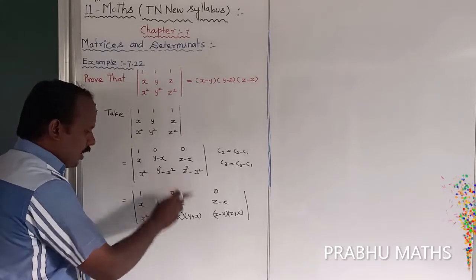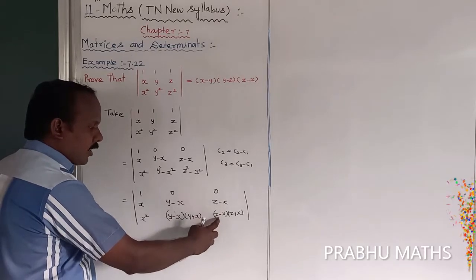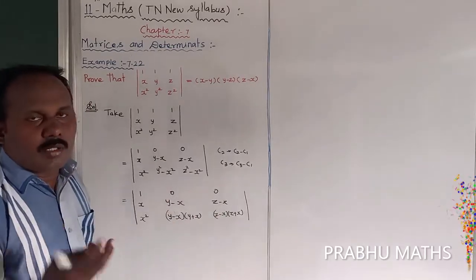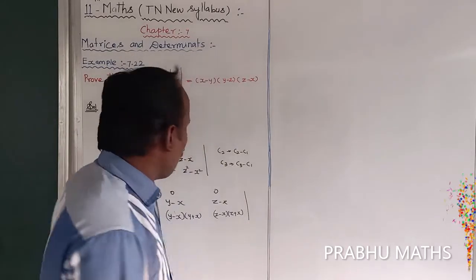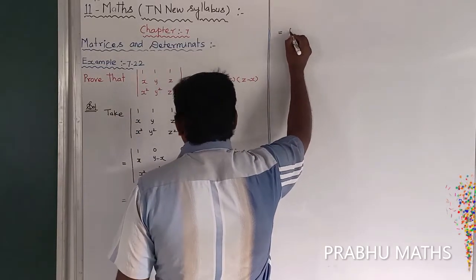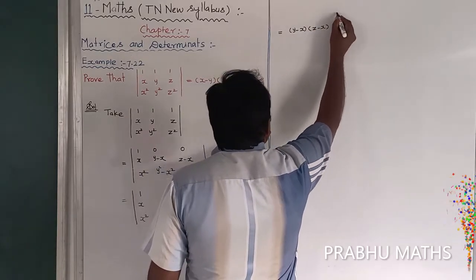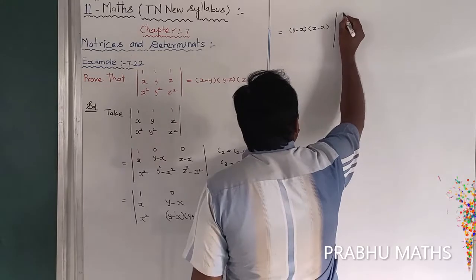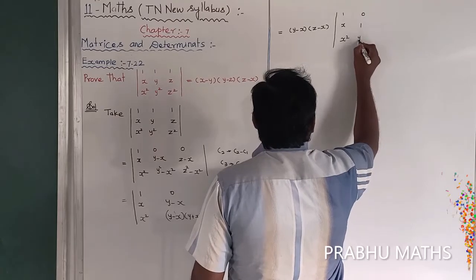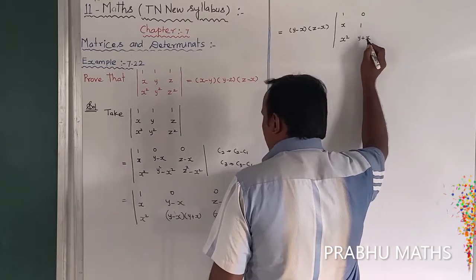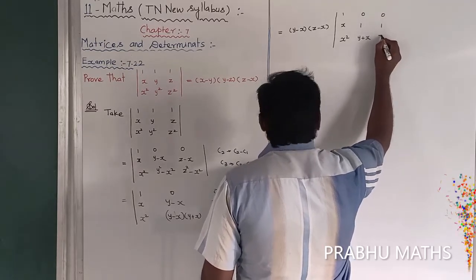Take out the common factor (y − x) from column C2 and (z − x) from column C3. The remaining matrix is: first column [1, x, x²], second column [0, 1, y+x], third column [0, 1, z+x].